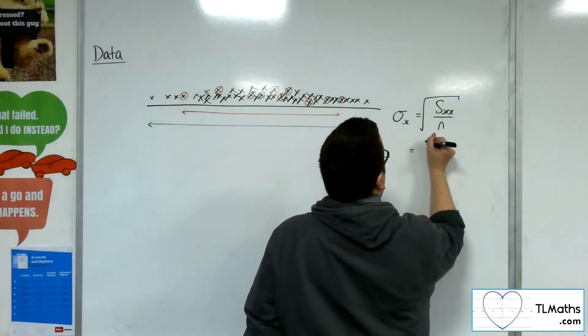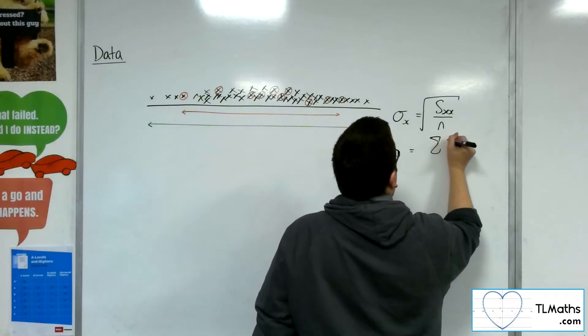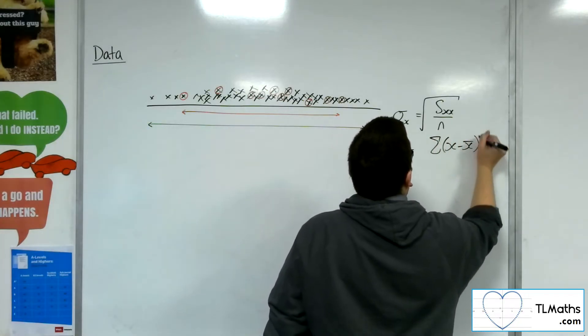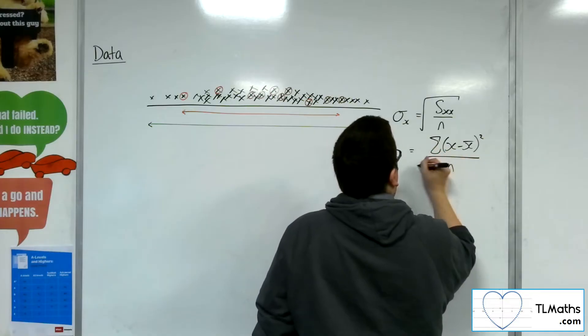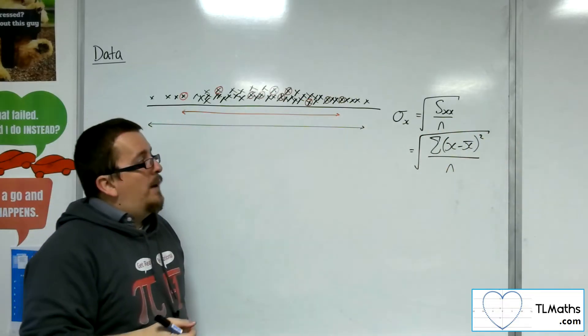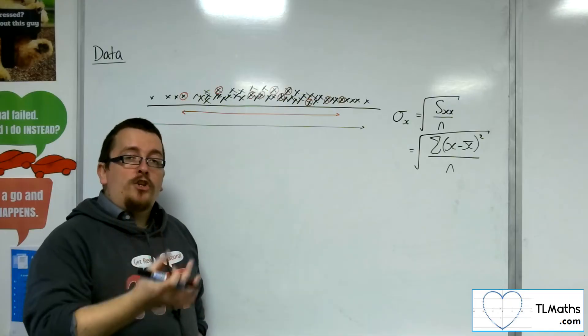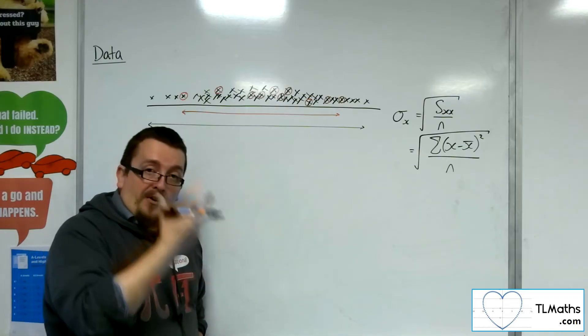So if I write it out in full, that's the sum of x minus x bar squared over n square rooted, that would be the standard deviation of the numbers in the sample.